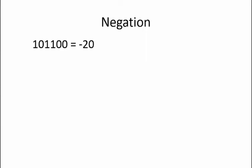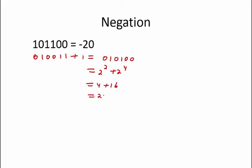An easy way of converting between positive and negative 2's complement numbers is by flipping all the bits and adding 1. For example, earlier we calculated that 101100 equals negative 20. If I take this number and flip all of the bits I get 010011. I then add 1 to that, which results in 010100. This number is equal to 2 squared plus 2 to the 4th, which equals 4 plus 16, which equals 20. This tells us that our original number 101100 was equal to negative 20.